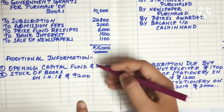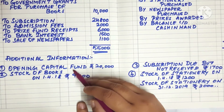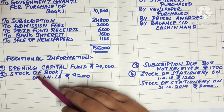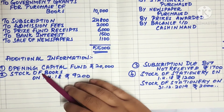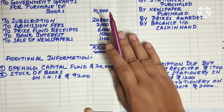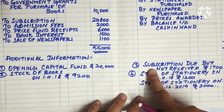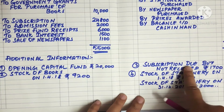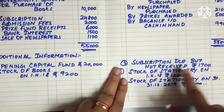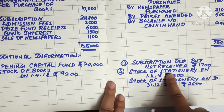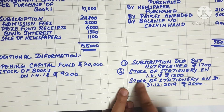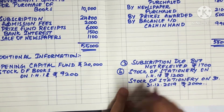Opening fund and stock of goods — this is one of the receipt items. We will look at the receipts and payment items. This is the subscription due but not received, so it is outstanding. Next, this is the stock of stationery items. We have opening stock and closing stock figures.